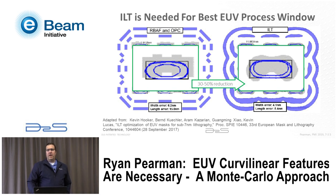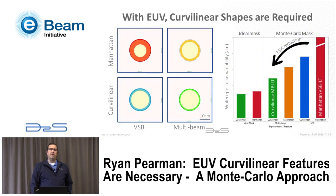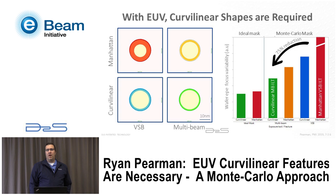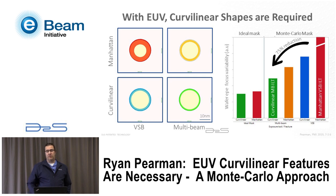The point of this talk is to really combine these two studies: to combine the mask variability with the need to have wafer plane EUV curvilinear shapes. We'll show data — which we'll get to at the end — showing about a 75% improvement, a really compelling reason to move the industry towards curvilinear shapes for EUV.